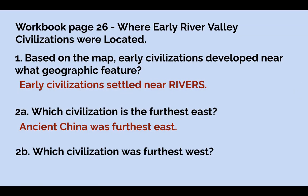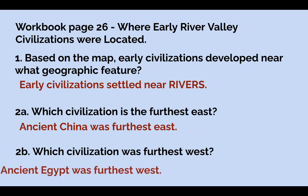Question 2B: which civilization was furthest west — closest to the Atlantic Ocean? Ancient Egypt was furthest west. If you look in Africa, the Nile River Valley civilization was the furthest west.